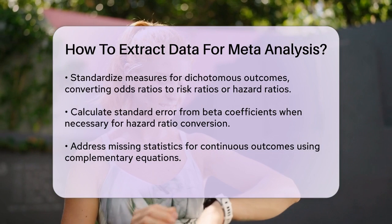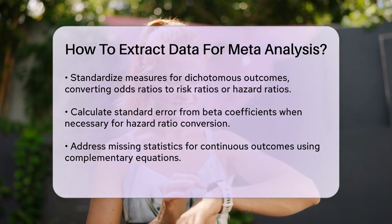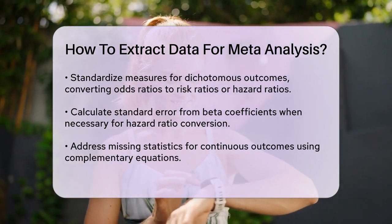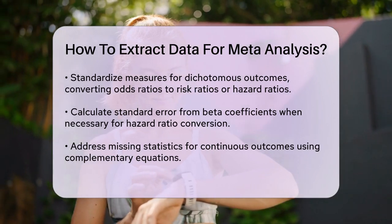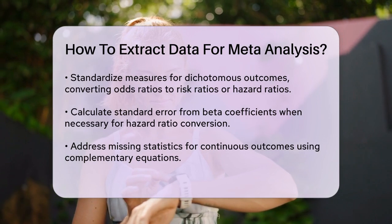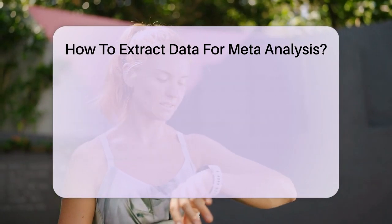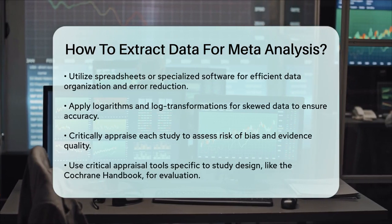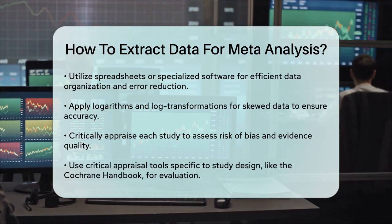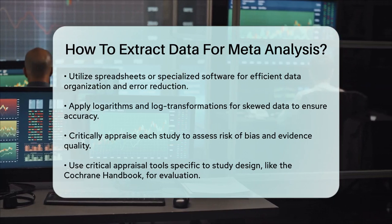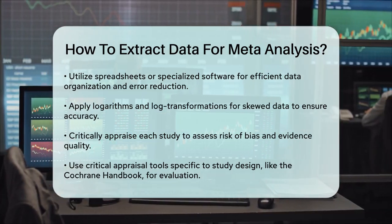To make data extraction more efficient, it's helpful to use tools like spreadsheets or specialized software. These tools can help you organize the data better and reduce the risk of errors and bias. For example, you can use a sample coding form to ensure consistency across all studies. Logarithms and log transformations might also come into play, especially when dealing with skewed data. Knowing how to handle these transformations can help you extract data accurately and efficiently.